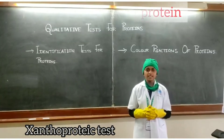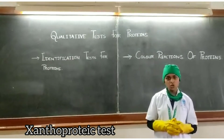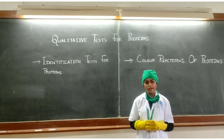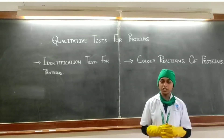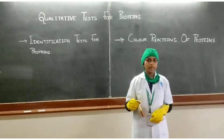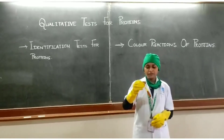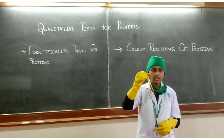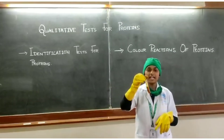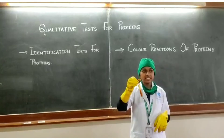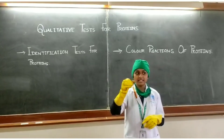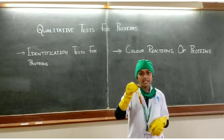Xanthoproteic test: sample solution plus 2 levels of concentrated nitric acid, boil for 1 minute, then add 40% NaOH and mix. By performing it, appearance of a yellow color followed by an orange color due to the addition of alkali indicates that aromatic amino acid-containing proteins may be present.